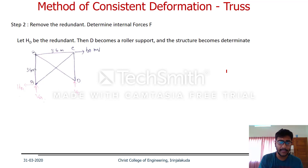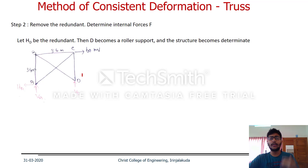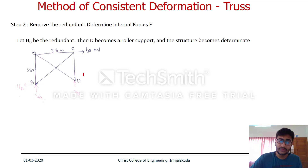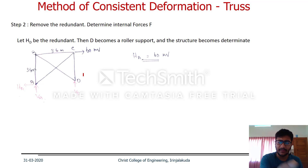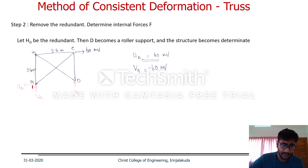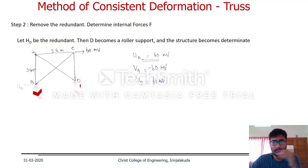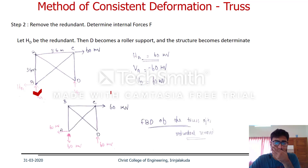With the roller support at D and H_D removed, we analyze the structure under the current loading case. Using equilibrium equations: ΣF_x = 0 gives H_A = 60 kN; ΣF_y = 0 and moment equation gives V_A = minus 60 kN (downward), and V_D = 60 kN upward. Now we determine the capital F internal forces using the method of joints.